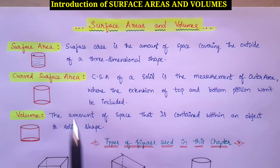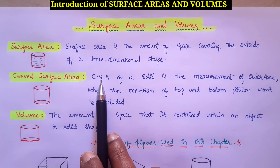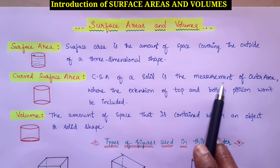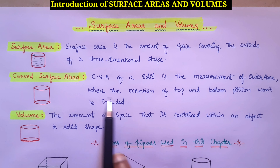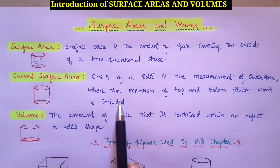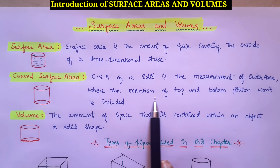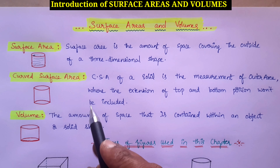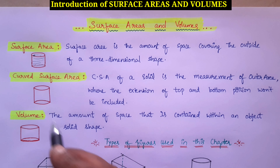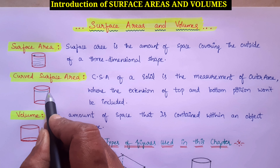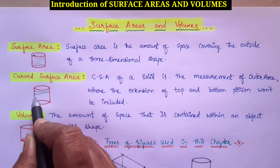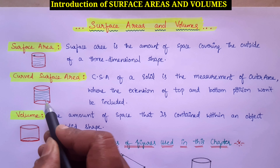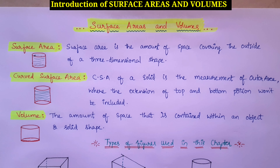When it comes to curved surface area, that is represented as CSA. The CSA of a solid is the measurement of outer area, where the top and bottom portions are not included. Curved surface area means only the surrounded part, except the upside and downside portions.